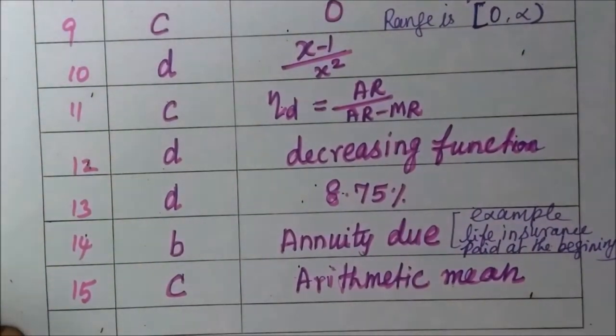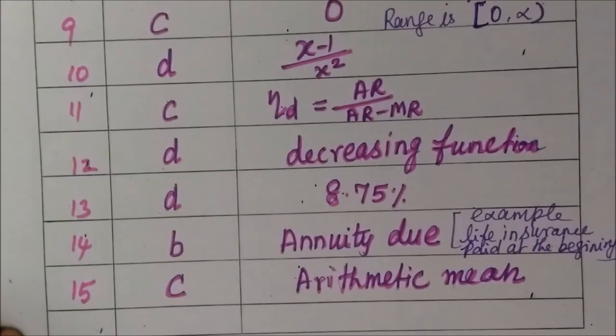Question 14: option b, annuity due. Annuity due means, for example, life insurance or housing loan where we are paying at the beginning of every year or month. The calculation is for annuity due.